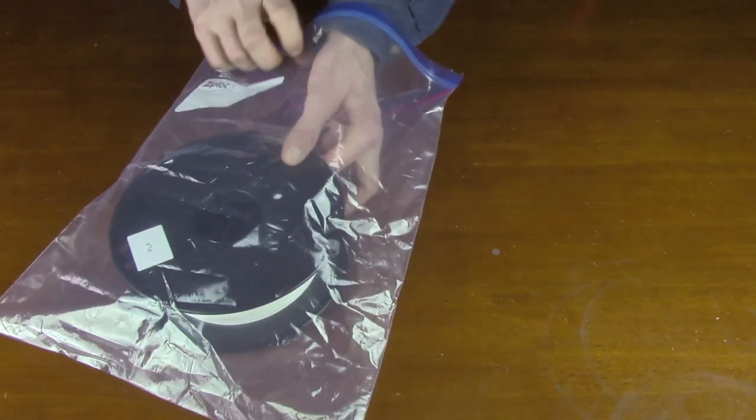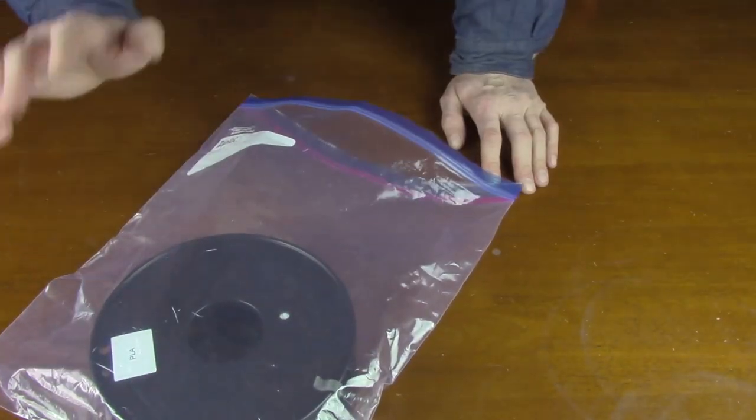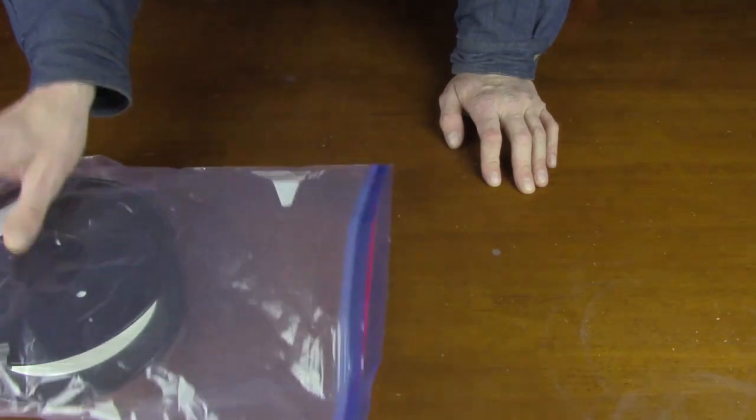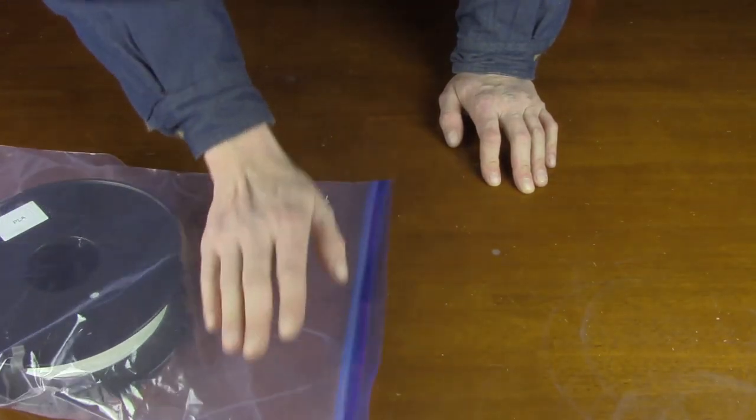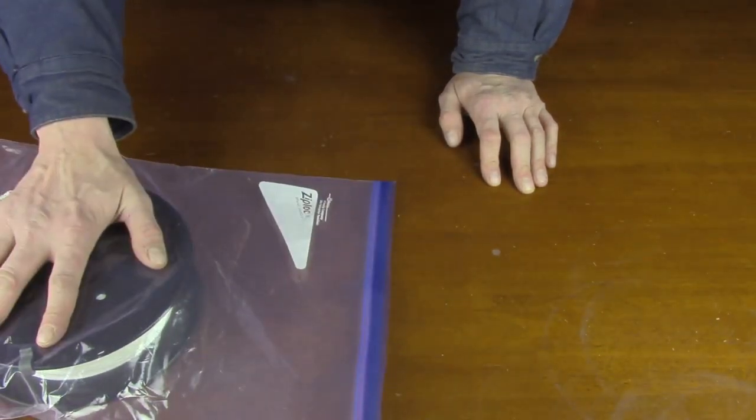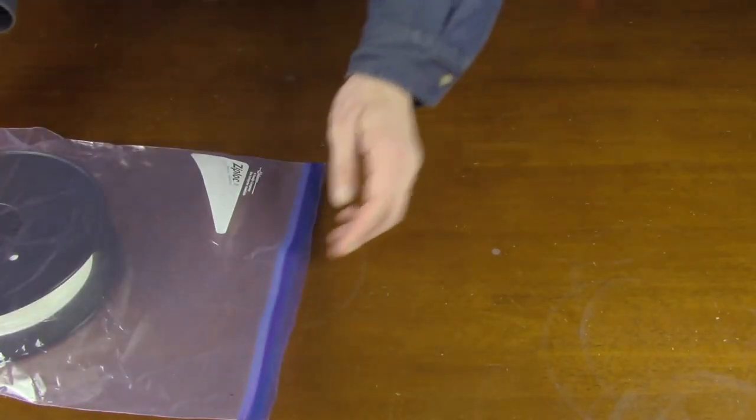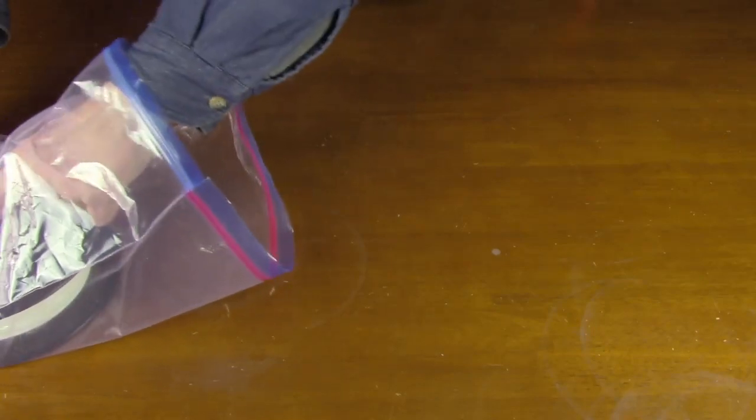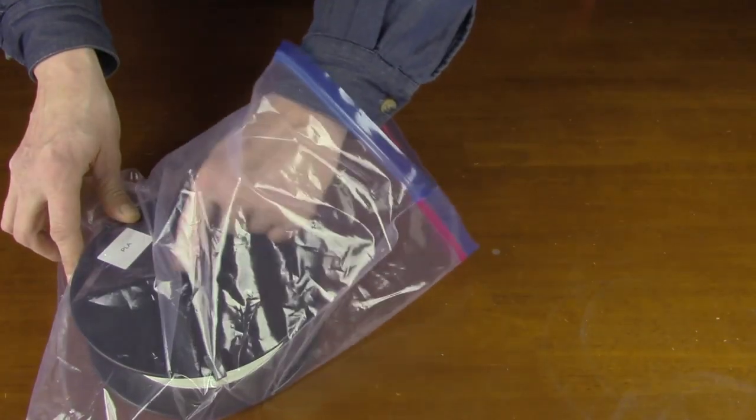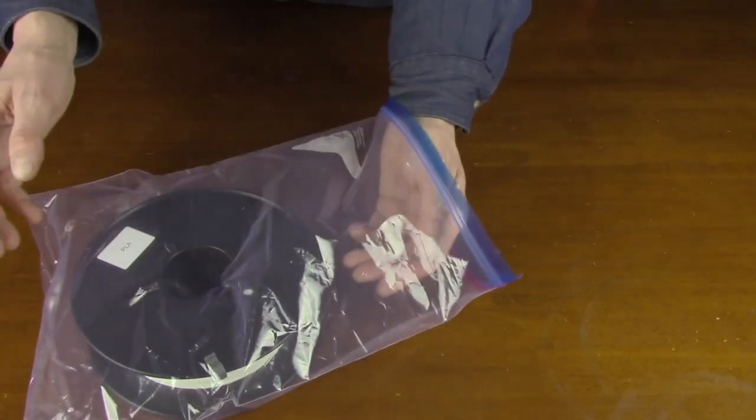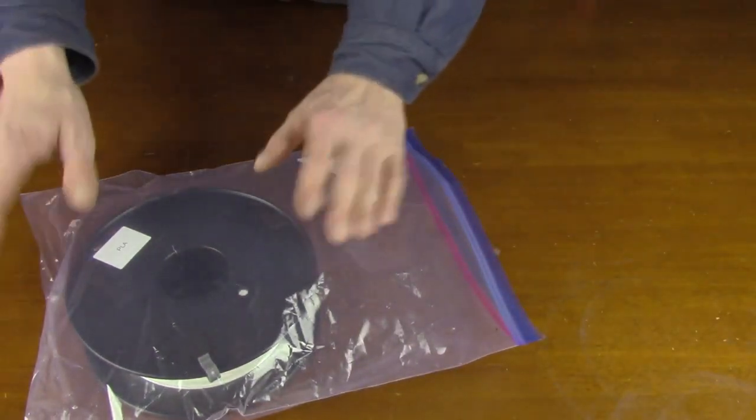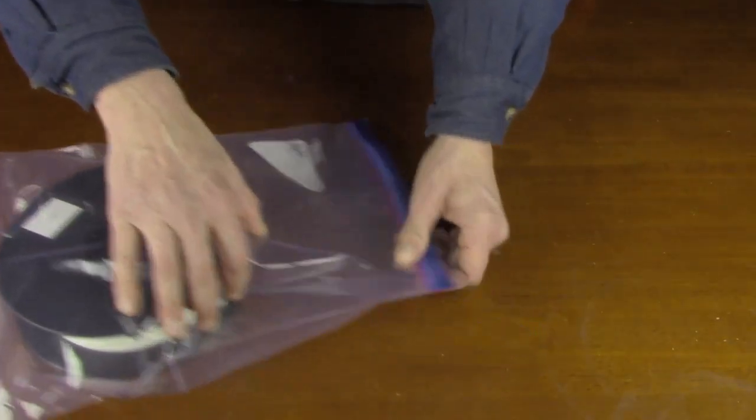Now I usually save my silica packs and I store them in a separate little Ziploc bag. I am out of them at the moment. This is the only spool I have that doesn't have a silica pack, but normally I would put that in and put it right next to the roll. Don't put it in the center here. That would be pointless because when you vacuum seal it, it's not going to be able to absorb any moisture that's in there.